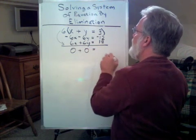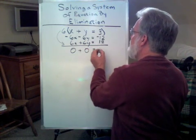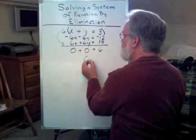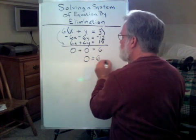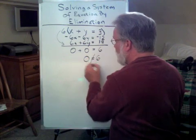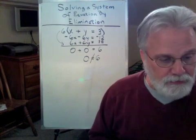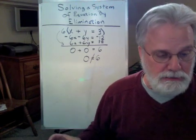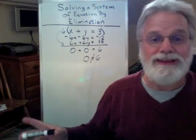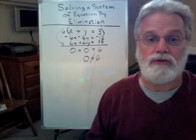And I have negative 12 plus 18. And that's 6. So, I have zero equals 6. And that's just not true. That's an untrue statement. And so, what we have is we have a system that has no solutions. It is known as an inconsistent system.